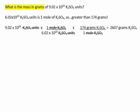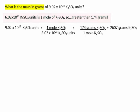What is the mass in grams of 9.02 times 10 to the 24th potassium sulfate units? Divide 9.02 times 10 to the 24th by 6.02 times 10 to the 23rd, then multiply by the molar mass of potassium sulfate to give 2607 grams of potassium sulfate.